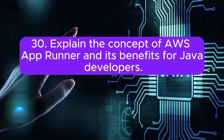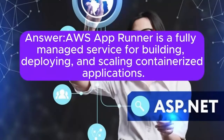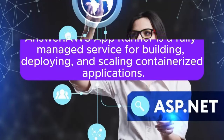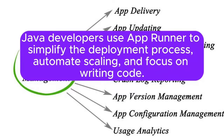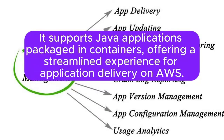Question 30: Explain the concept of AWS AppRunner and its benefits for Java developers. AWS AppRunner is a fully managed service for building, deploying, and scaling containerized applications. Java developers use AppRunner to simplify the deployment process, automate scaling, and focus on writing code. It supports Java applications packaged in containers, offering a streamlined experience for application delivery on AWS.